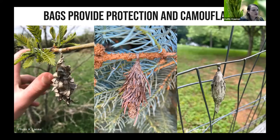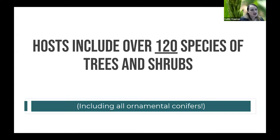Here are a couple more examples — a pretty-looking bag on a locust tree, and a more naked-looking bag on a fence. Hosts include over 120 different species of trees and shrubs, so these guys are more on the generalist side. They have many different hosts, including all ornamental conifers and all species of Christmas trees.